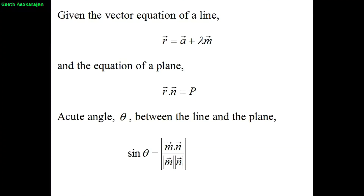Given the vector equation of a line r = a + λm, and the equation of the plane r·n = P, the acute angle θ between the line and the plane can be found using the formula: sin θ = |m·n| / (|m| × |n|), where m is the direction vector of the line and n is the normal vector of the plane.